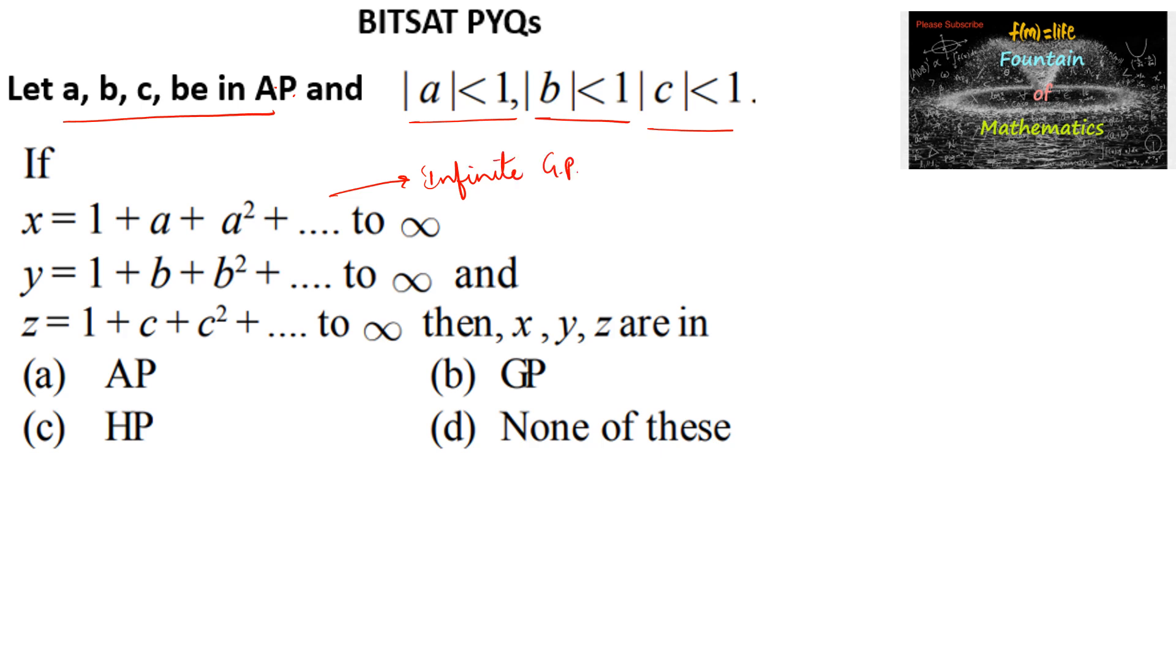We can say they are infinite GP sums, and we know sum to infinity is a upon 1 minus r, where mod r is less than 1. Here r equals a and mod a is less than 1, here r equals b and mod b is less than 1, and here r equals c and mod c is less than 1.